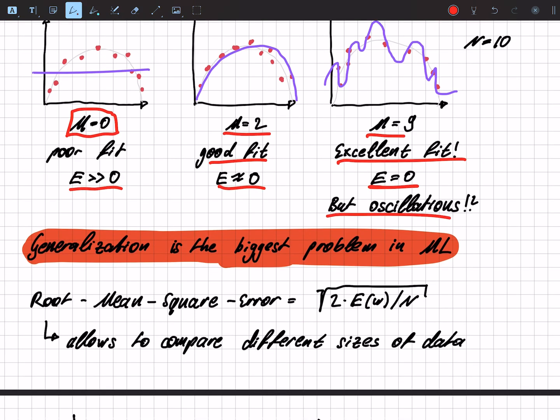So we introduce a new error, the root mean square error. We choose the same error function as before, so that's 1 over 2 times the square of the function, the polynomial y minus the target vector.